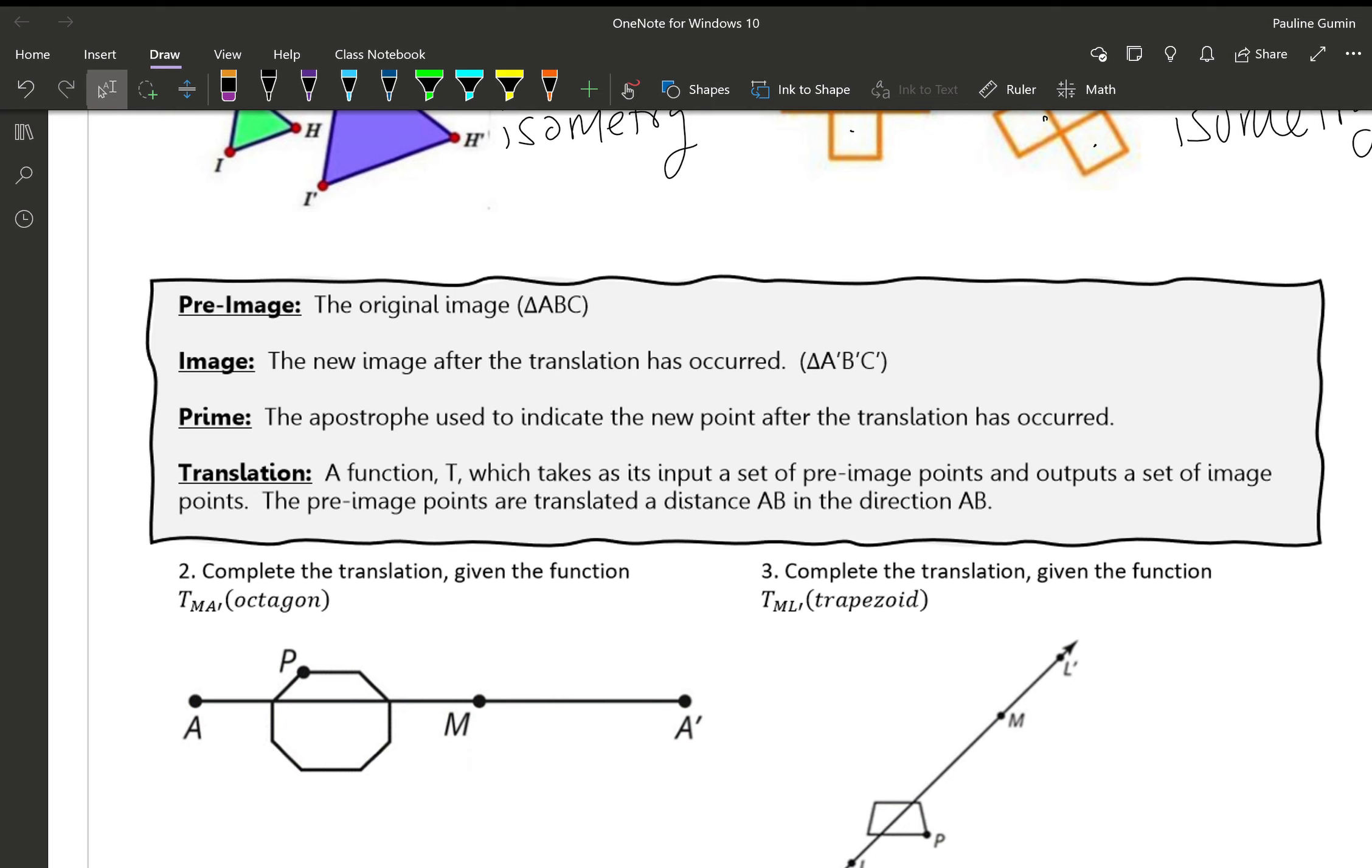Prime is the apostrophe that we use to denote an image. So for example in this definition our original is triangle ABC and our image is triangle A prime B prime C prime. So each time you see an apostrophe you pronounce that as prime.